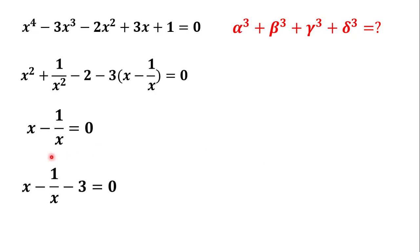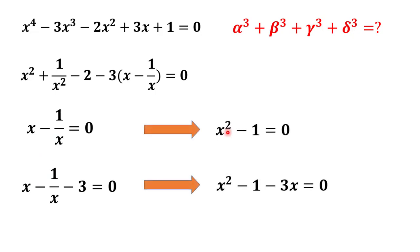We need to solve these two equations. Since we don't want fraction terms, we multiply both sides by x. For the first equation we get x squared minus 1 equals 0, and for the second equation we get x squared minus 3x minus 1 equals 0.